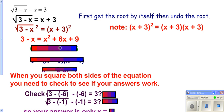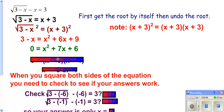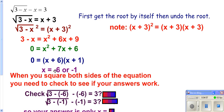Now it's just a quadratic. So you set it equal to 0. In this case it factors. You set each factor equal to 0. It's easy to get extraneous roots whenever you square both sides, so you really need to plug each answer back into your original problem to see if you get the same thing on each side.